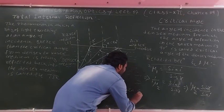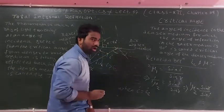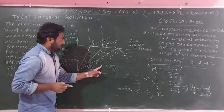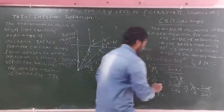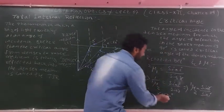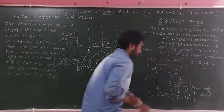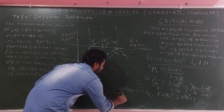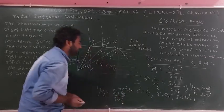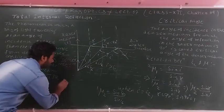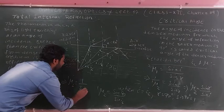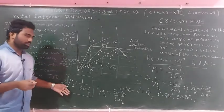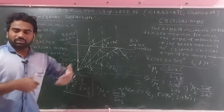When the angle of incidence is equal to the critical angle Ic, the angle of refraction R is 90 degrees. So sin R equals 1. Therefore mu12 equals 1 divided by sin Ic. This is the relationship between refractive index and critical angle. The formula is: mu equals 1 by sin Ic.